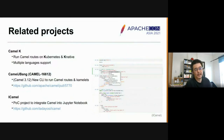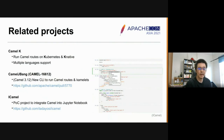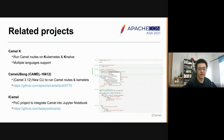Camel K — it is a cloud native enabler for Camel routes. My talk mainly focused on local execution scripts. But if you want to run integrations on Kubernetes or OpenShift, Camel K is definitely the choice.